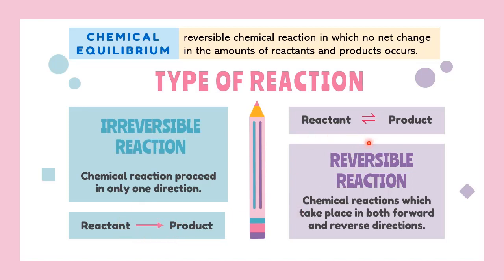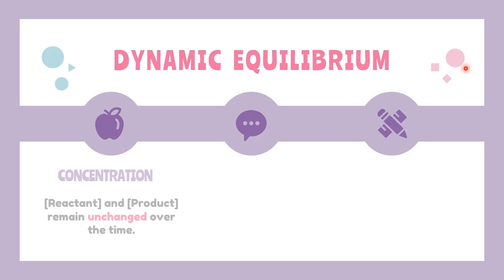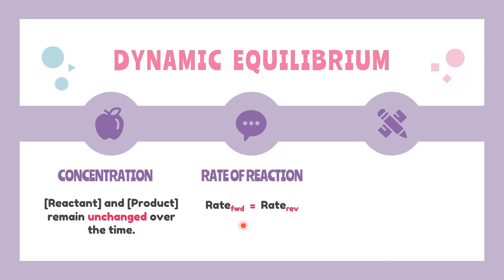There are three conditions needed to be satisfied by a reaction in order for it to be in a state of dynamic equilibrium. In terms of concentrations, the reactant concentrations and product concentrations will stop changing — they will remain unchanged over time. This means the rate of reaction for both forward and reverse reactions will be equal, with no net change.